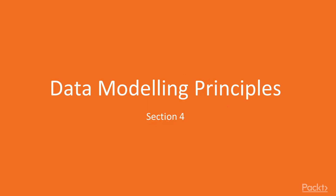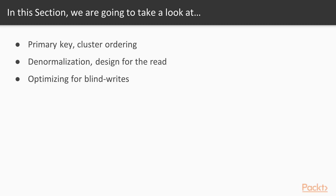Welcome to the fourth section of the Apache Cassandra course. In this section we will be looking at data modeling principles — how to model data to reflect how Cassandra is built and fully leverage it to gain low latency and good performance. We'll be looking at the primary key and clustering key more in depth, denormalization design for reads, and optimizing writes.